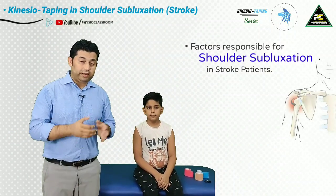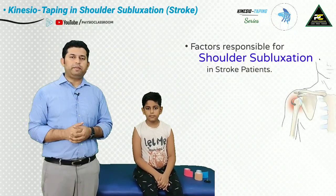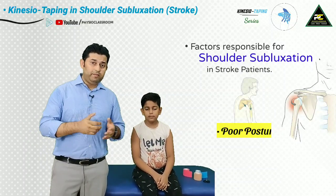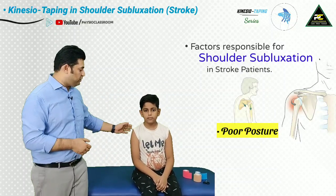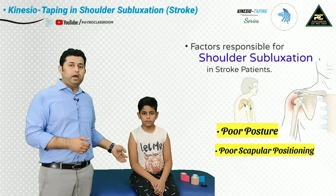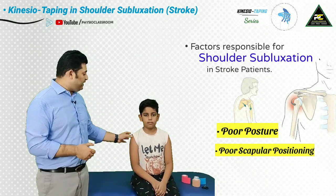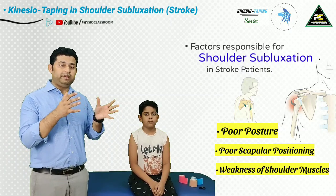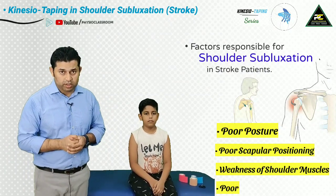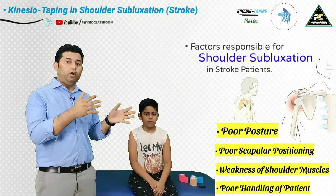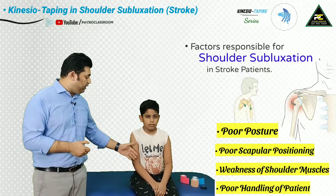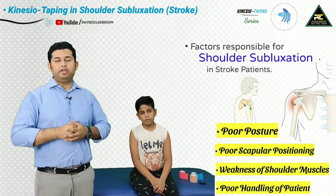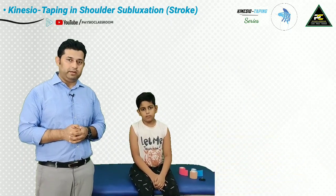There are many factors that can lead to development of hemiplegic shoulder pain or subluxation in stroke patients — namely poor posturing, poor positioning of the scapula on the thoracic wall, as well as spastic or flaccid weakness of the dynamic stabilizers of the shoulder joint. Also, poor handling of the upper limb during exercises and transfer can result in shoulder subluxation and shoulder pain.